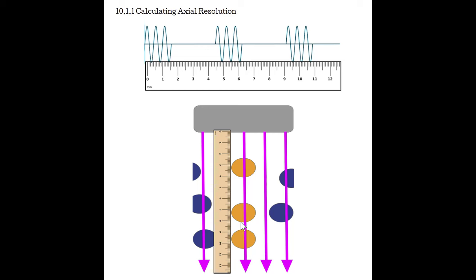In this example, we have reflectors about half a centimeter apart. If the SPL is one centimeter, the axial resolution would be half a centimeter — appropriate to show two reflectors. But if the SPL were two centimeters, making axial resolution one centimeter, then the reflectors are too close for the machine to distinguish them as two separate reflectors. Let's take a look at what's happening when this occurs — a simplified look at what happens during the pulse to explain why we get unresolved reflectors.